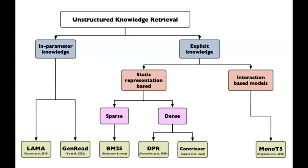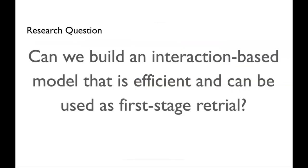Can we do something better? Can we create models that take into account the input while searching? There are approaches that do that, but mostly they are super expensive, so you use them only for re-ranking — you get a bunch of candidates and do a fine-grained analysis over a subset. The main question I want to answer in this talk is: can we build interaction-based models that are efficient to run and that can be used as first-stage retrieval?